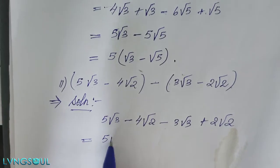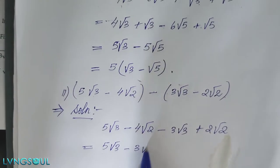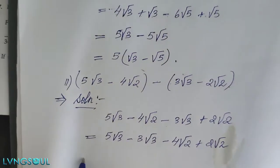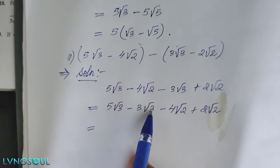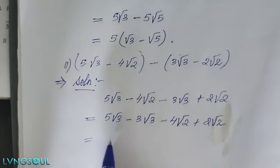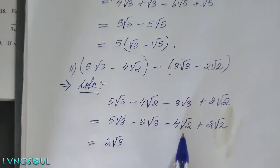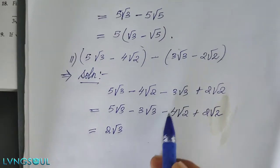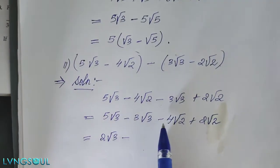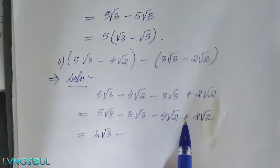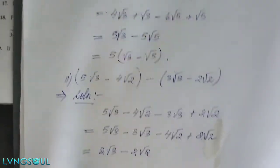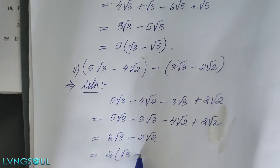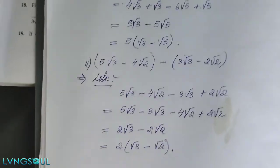So: 5 root 3 minus 2 root 3 minus 3 root 3, plus 2 root 2. Combining like terms: root 3 terms together, root 2 terms together. 4 root 2 minus 2 root 2 gives 2 root 2. These are irrational numbers.